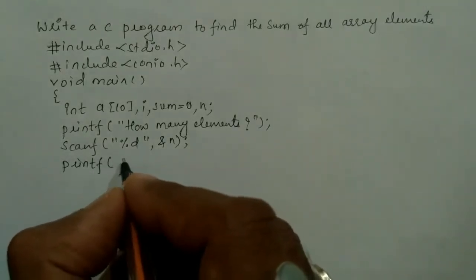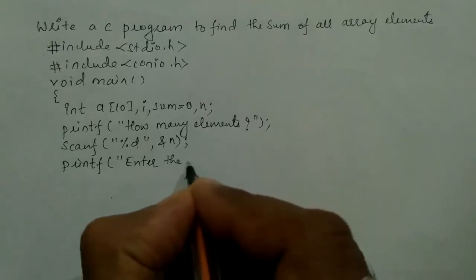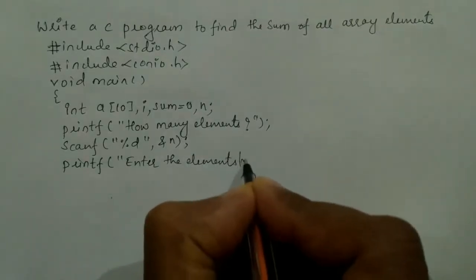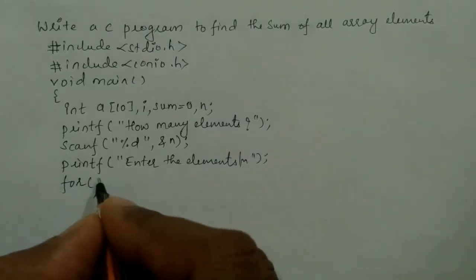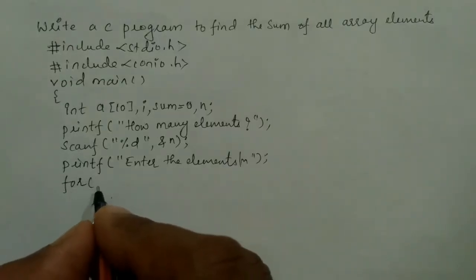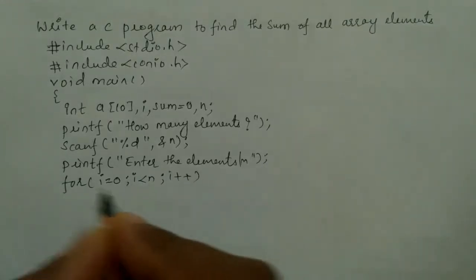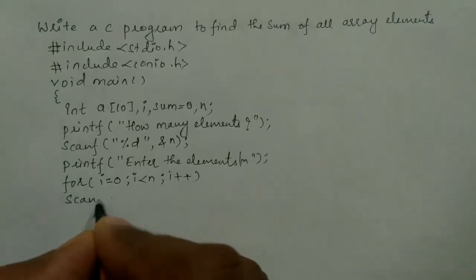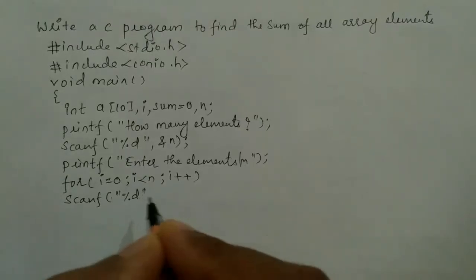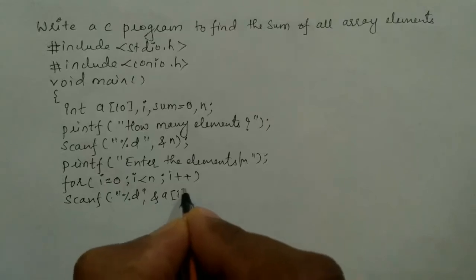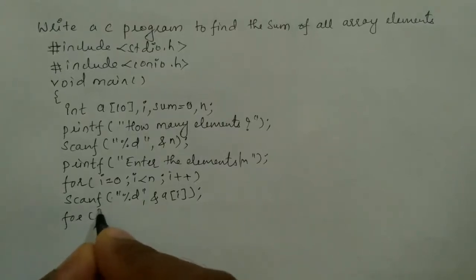We use a printf statement to display the message to the user to enter the elements, followed by a newline. To insert elements one by one we use a for loop: for i equal to zero, i less than n, i plus plus. Inside, we write scanf with %d and ampersand of array a of i, then semicolon.